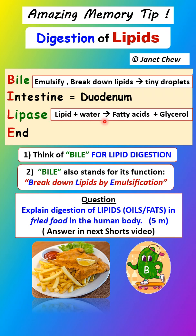There is only one enzyme involved in the digestion of lipids — lipase. To remember the digestion of lipids, think of BILE: B for bile, I for intestine (where the process occurs), L for lipase, and E for the end. If you've seen my other shorts, BILE can also help you remember the function of bile: B for breakdown, L for lipids, E for emulsification, and I for intestine, the place where the process occurs.